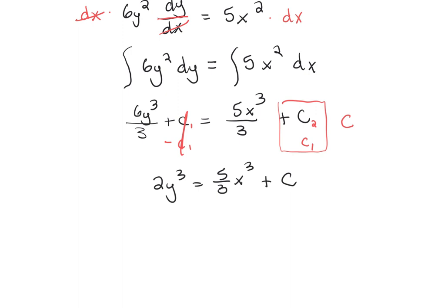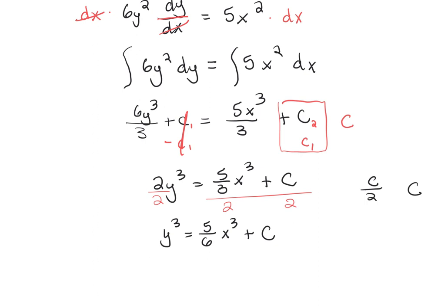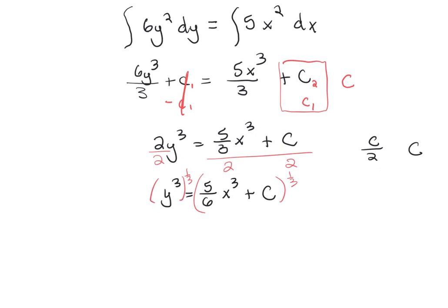If I divide both sides by 2 — which is the same as multiplying by one half — I'll have y to the third equals 5 over 6 times x to the third plus c. A constant divided by 2 is still just a constant, so I keep calling it c. Then to get y by itself, we cube root both sides, or raise both sides to the power of one third. So our final answer is y equals the quantity 5 over 6 times x cubed plus c, all raised to the power of one third.